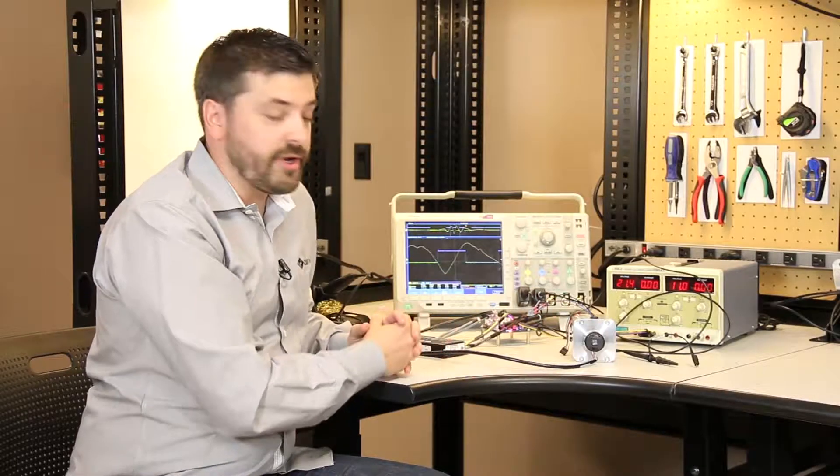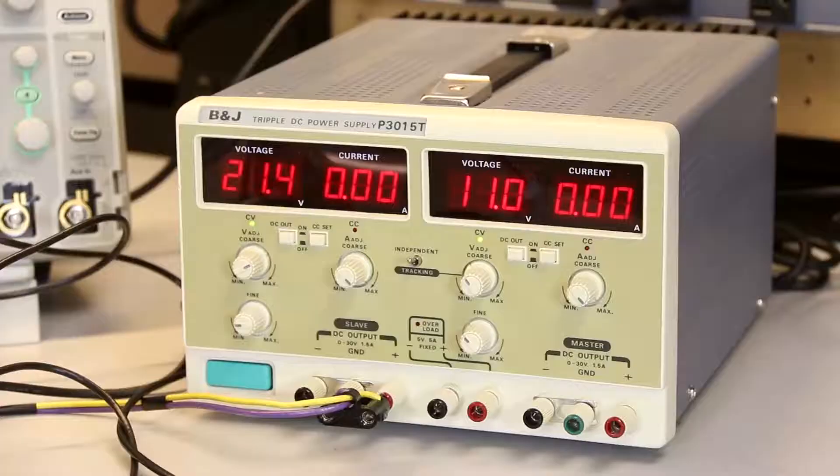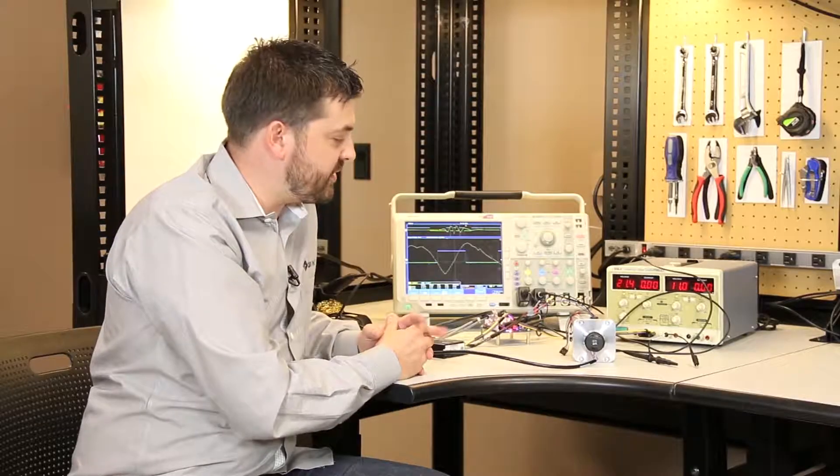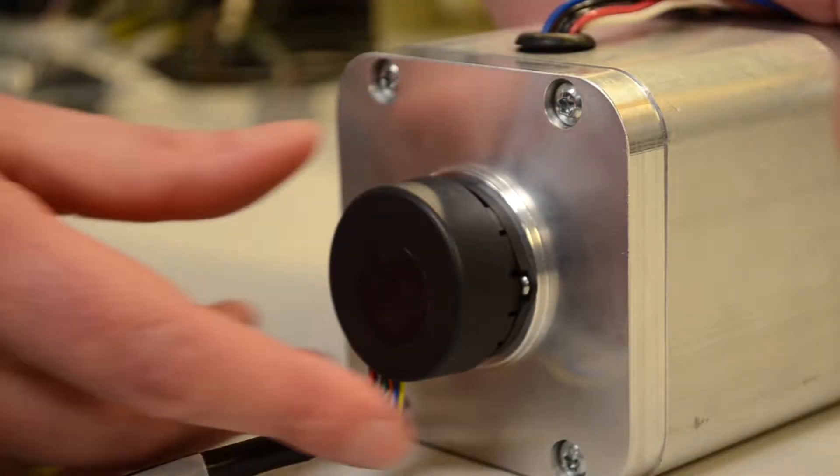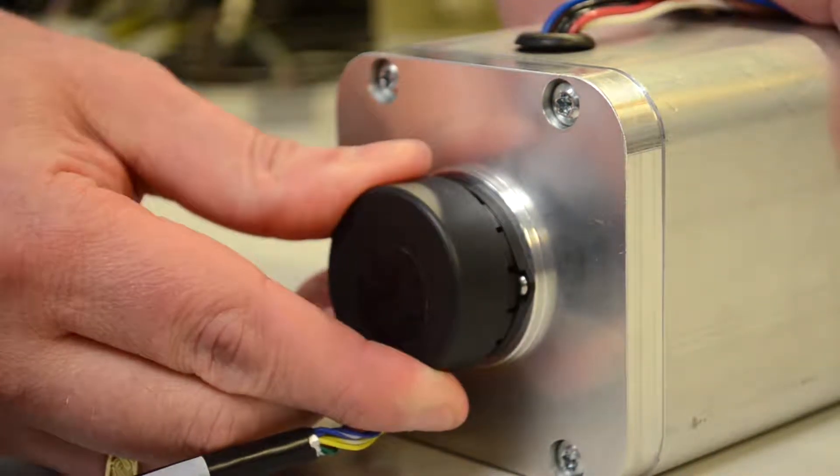Next, you need to take the motor and encoder over to a back EMF fixture. At the back EMF fixture you'll need a power supply, an oscilloscope, and during that process you iteratively adjust the encoder disc until you get a proper aligned back EMF signal.